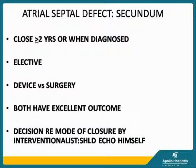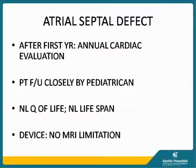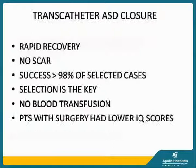For atrial septal defect secundum, if you have the patient in front of you with a confirmed diagnosis matching clinical findings, closure is usually done at age two years or after — it is an elective closure. There is an option of device closure versus surgical closure; both have excellent outcomes and the decision should be made by the person performing the intervention. After the first year of closure, the patient requires only once-a-year cardiac evaluation, followed closely by the pediatrician. The patient has a normal quality of life and lifespan, and there are no MRI limitations with the device as it is MRI-safe non-ferrous metal. Transcatheter ASD closure advantages include rapid recovery, no scar, success rate more than 98 to 99 percent, no blood transfusion required, and selection of the right patient is key.